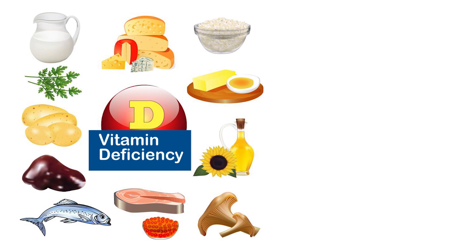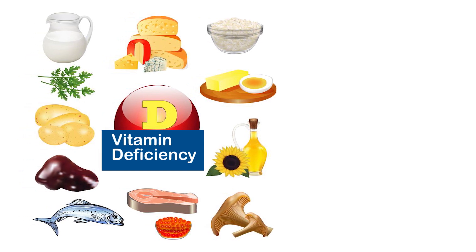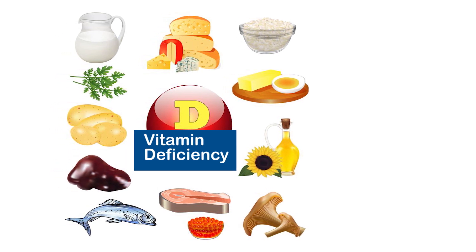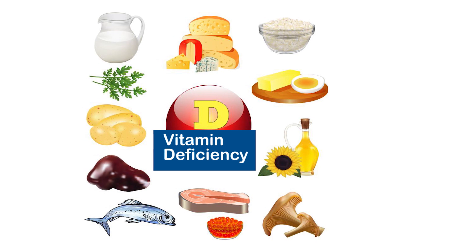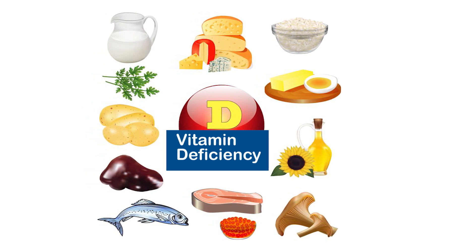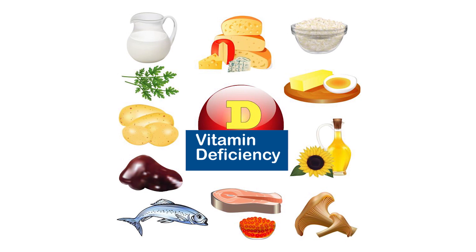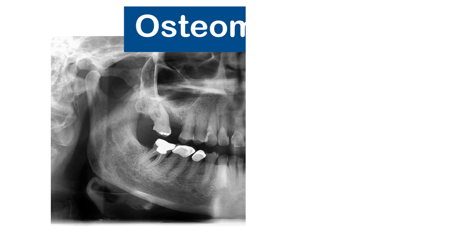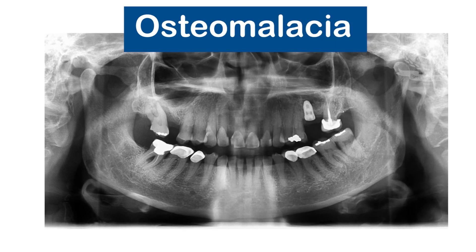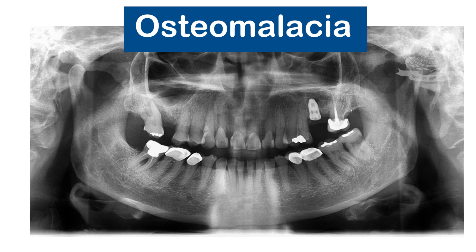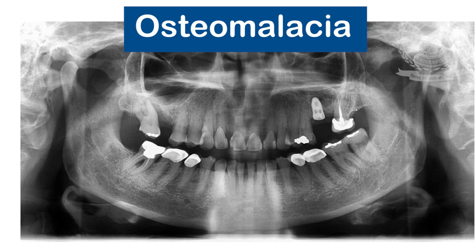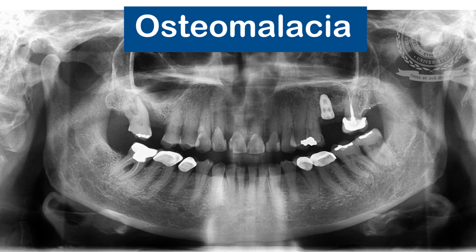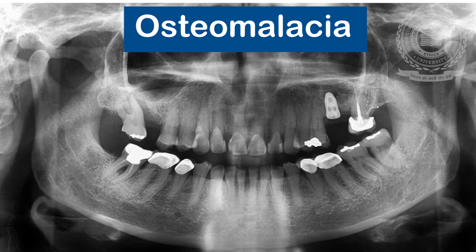Vitamin D disorders: the deficiency of vitamin D in adults leads to osteomalacia. It is due to the deficiency of dietary vitamin D or lack of exposure to sunlight. Homebound elderly patients who are unable to wear dentures or who are strict vegetarians are more at risk. Anticonvulsant drugs like phenobarbital may cause drug-induced osteomalacia. Orally, there is a decrease in trabecular bone, indistinct lamina dura, and an increase in chronic periodontal disease, which have been reported.